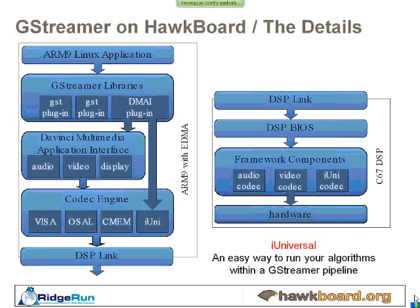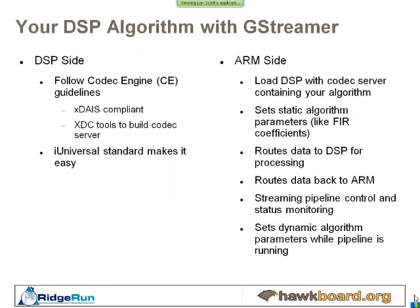Your I-Universal algorithm running on the DSP can also directly use the hardware accelerators available to the C67. This diagram shows all the components involved to route data from your application using GStreamer through the DSP and back to your application.